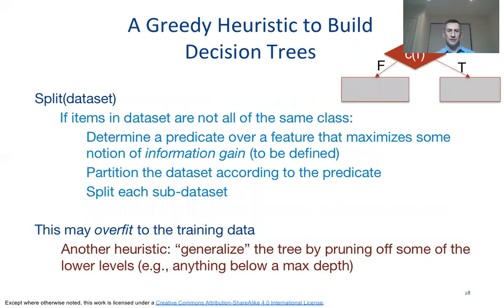These simpler algorithms are a type called greedy algorithms, because at every point in time we're trying to do the best we can, looking myopically at our available decisions. A greedy algorithm starts with all the data, and if the data is not all the same class, it determines a feature and condition over which to split by maximizing some notion of information gain. It then splits the data into subsets and continues until reaching some termination point.